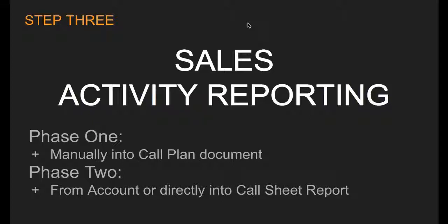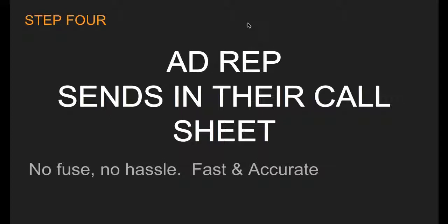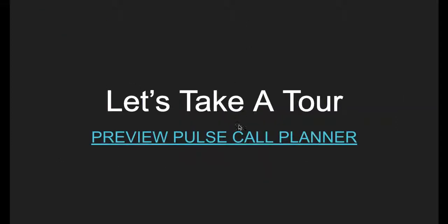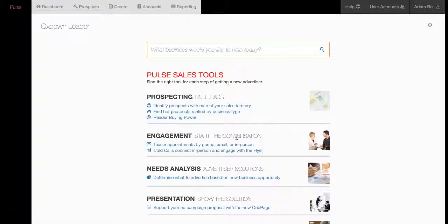The second phase, which I think you're going to love, will be automated. From the account page for that business within your Pulse sales tools, or directly with the Pulse call sheet, you're going to be able to tag or click on a specific activity and record it right into your call sheet. And then the last step is to be able to submit and send in your call report call sheet — no fuss, no hassle, it'll be fast and easy. So let's take a look at a top-level overview of the Pulse call planner call management program.